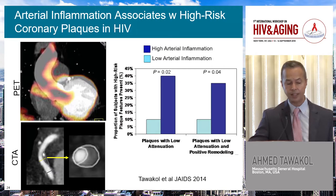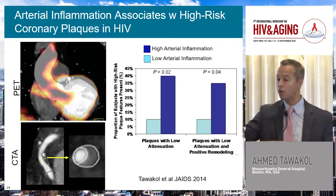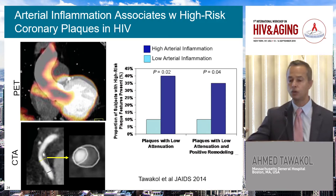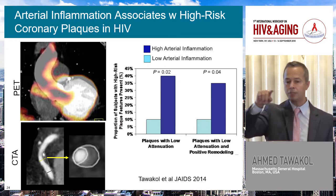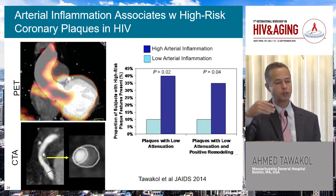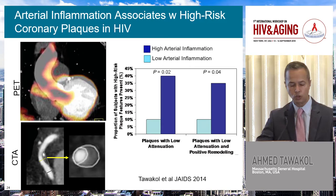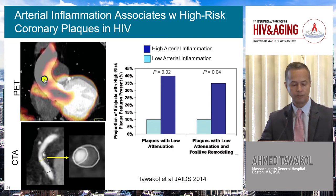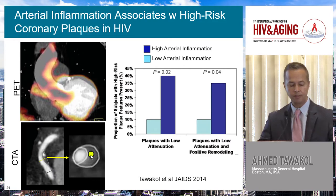Moreover, arterial inflammation in the ascending aorta gave us insights into what was going on in the coronaries. We can measure plaques in the coronaries by looking at low attenuation — lipid-rich — plaques, which are the most dangerous types in individuals without blockages. FDG uptake was increased in individuals who have those types of plaques. Individuals with high arterial inflammation tend to have on CT this big bulging area of lipid in the vessel wall that looks innocuous from the lumen but tends to rupture and cause MI.